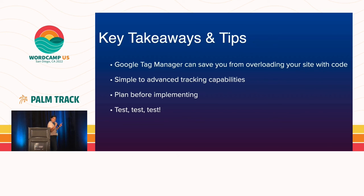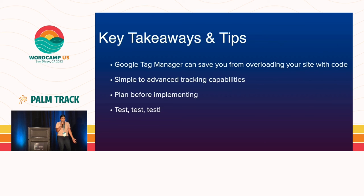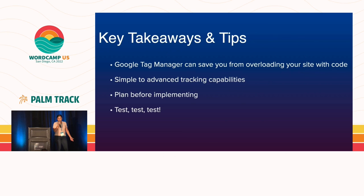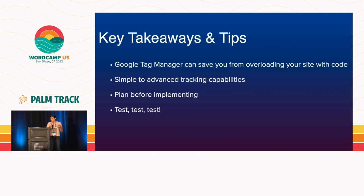The last tip is to always test. In GA4 they have a debug view, which actually came from Google Tag Manager. Before pushing anything live, you're able to test everything from start to finish. There are times where I've implemented navigation tracking and it ends up tracking something in a footer that might share a common CSS denominator. So you have to go back, adjust it, retest it, send it to someone else to test if needed, make sure it all works. Then you can push it live and it'll automatically pull into your analytics data set. I can't stress testing enough.